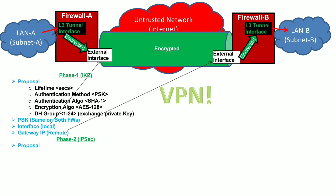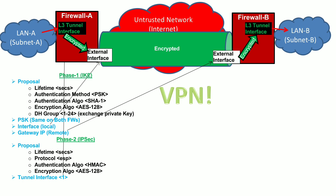In Phase 2 we configure the parameters for IPsec Security Associations. This similarly includes a proposal set with the lifetime of the security association, and the protocol — which can be ESP, or ESP and AH. Normally when configuring a VPN between two gateways, the VPN works in tunnel mode. We also configure the authentication algorithm, for example HMAC, and the encryption algorithm, for example AES.